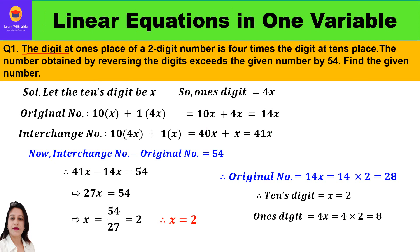The first question: the digit at one's place of a two-digit number is four times the digit at the tens place. The number obtained by reversing the digits exceeds the given number by 54. Find the given number. I have already explained the concept behind two-digit numbers in my previous video — I'll share the link in the description box.